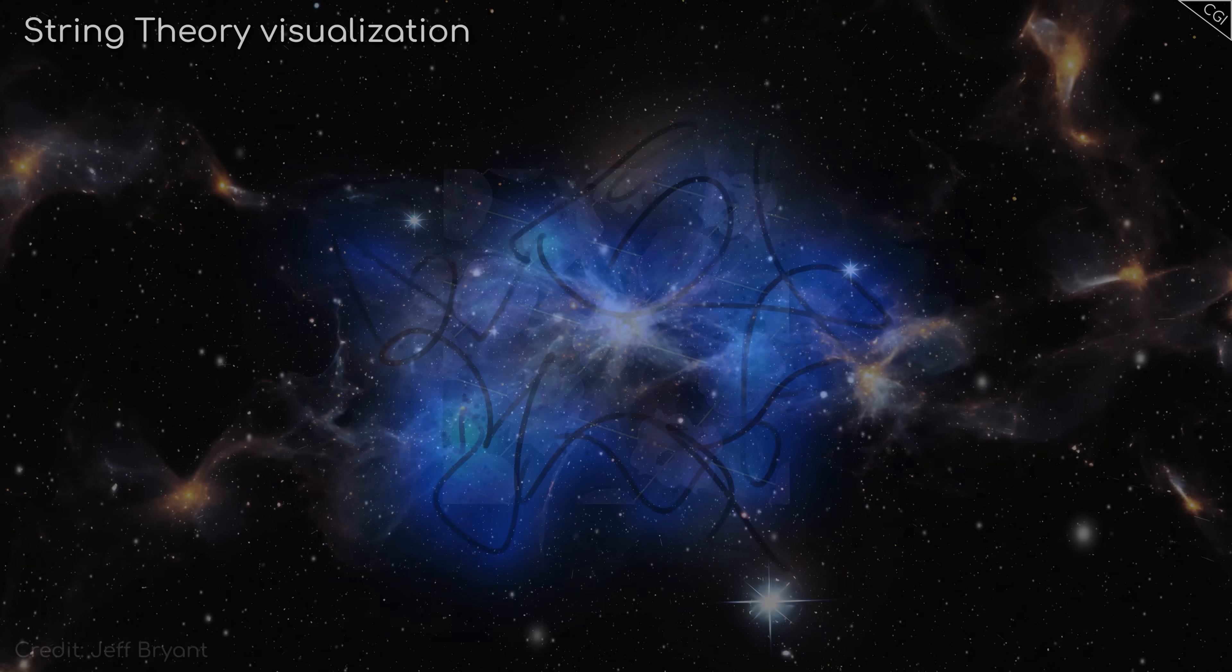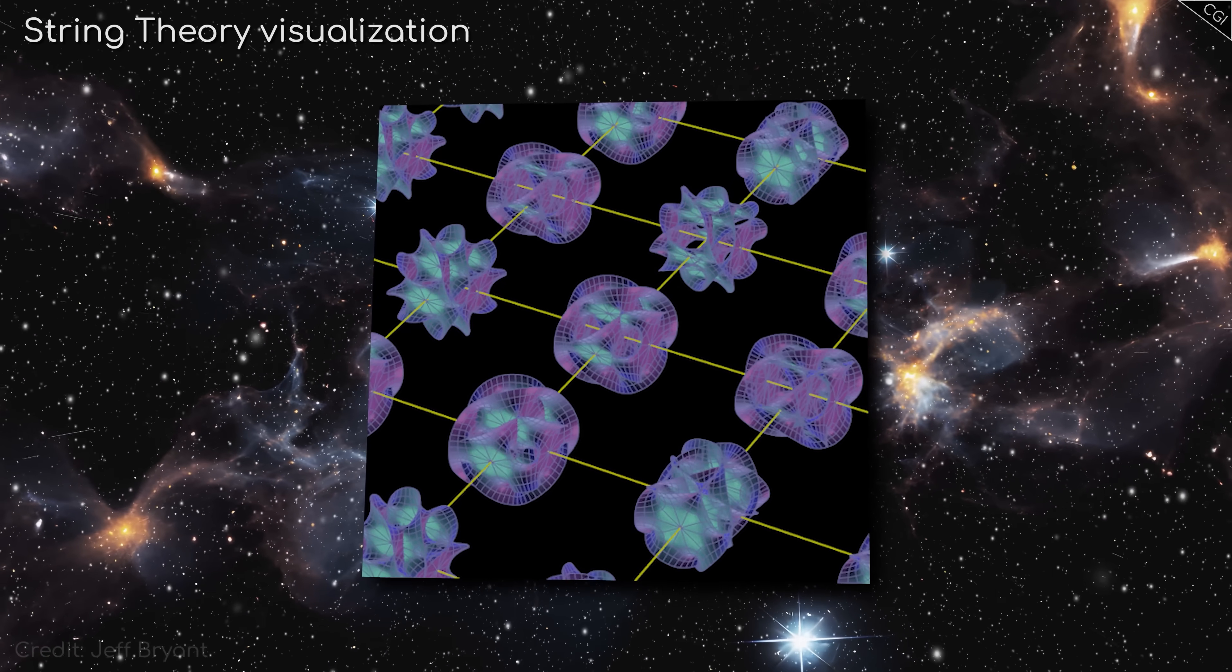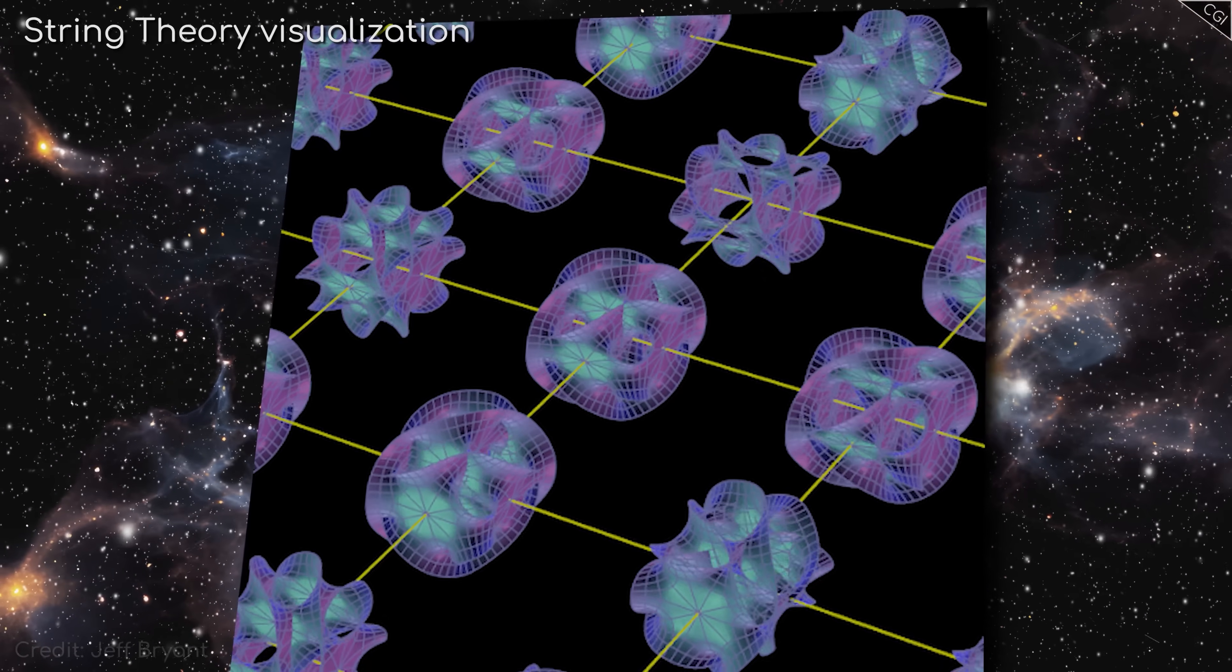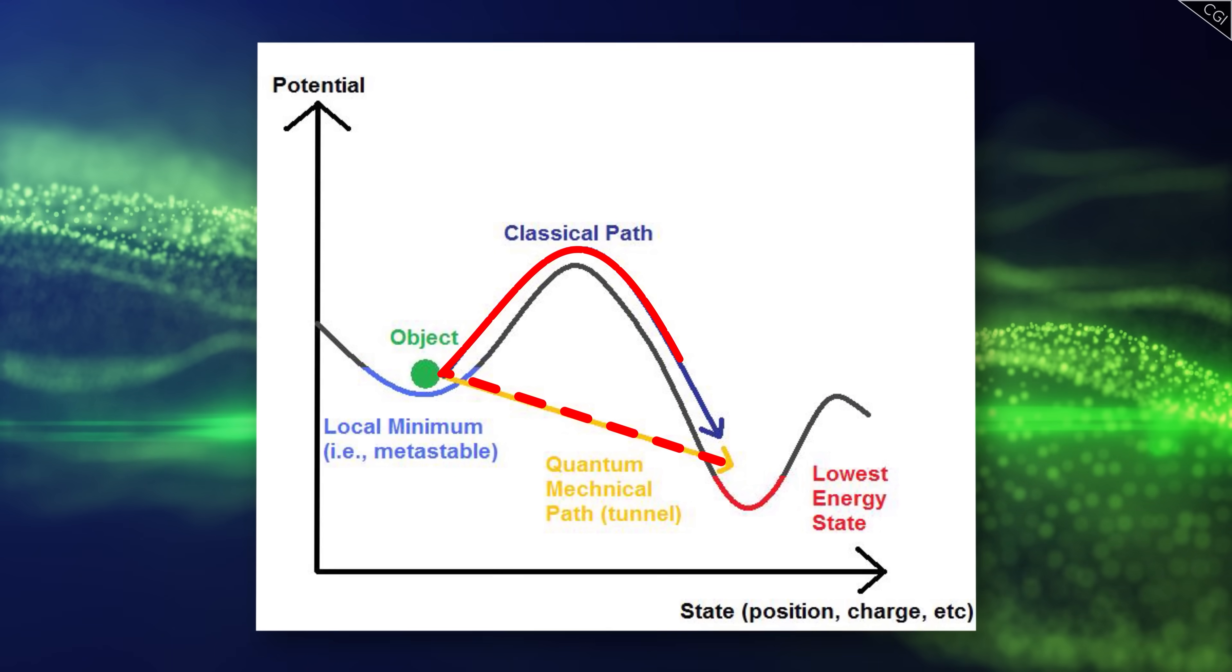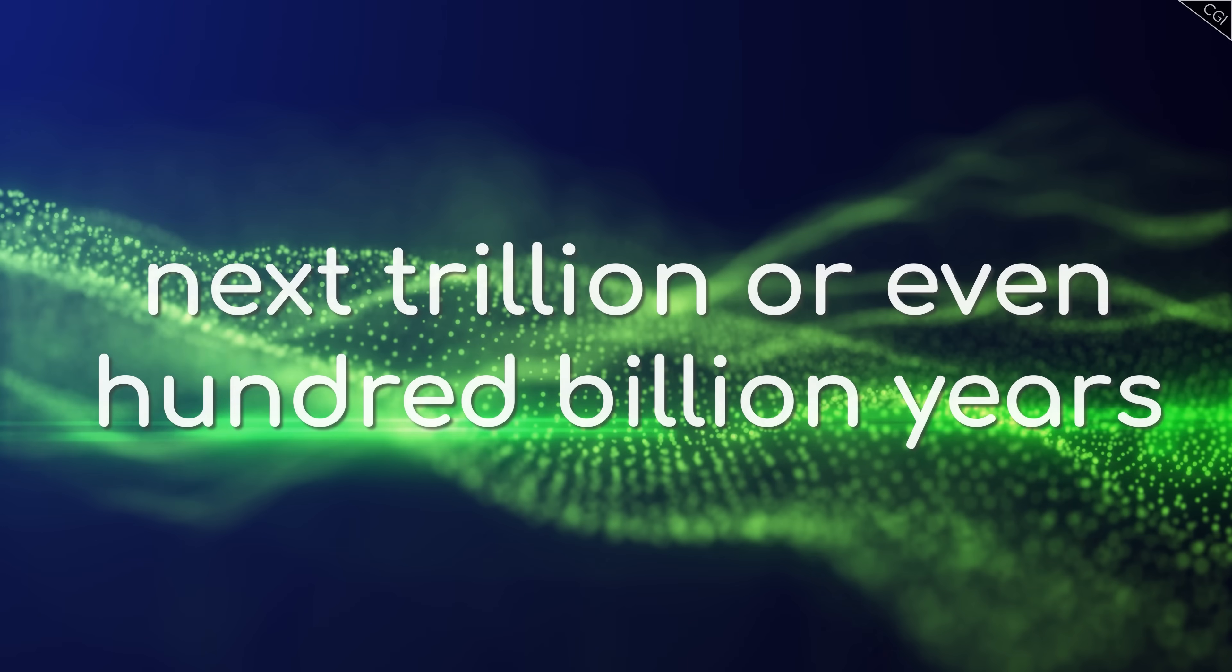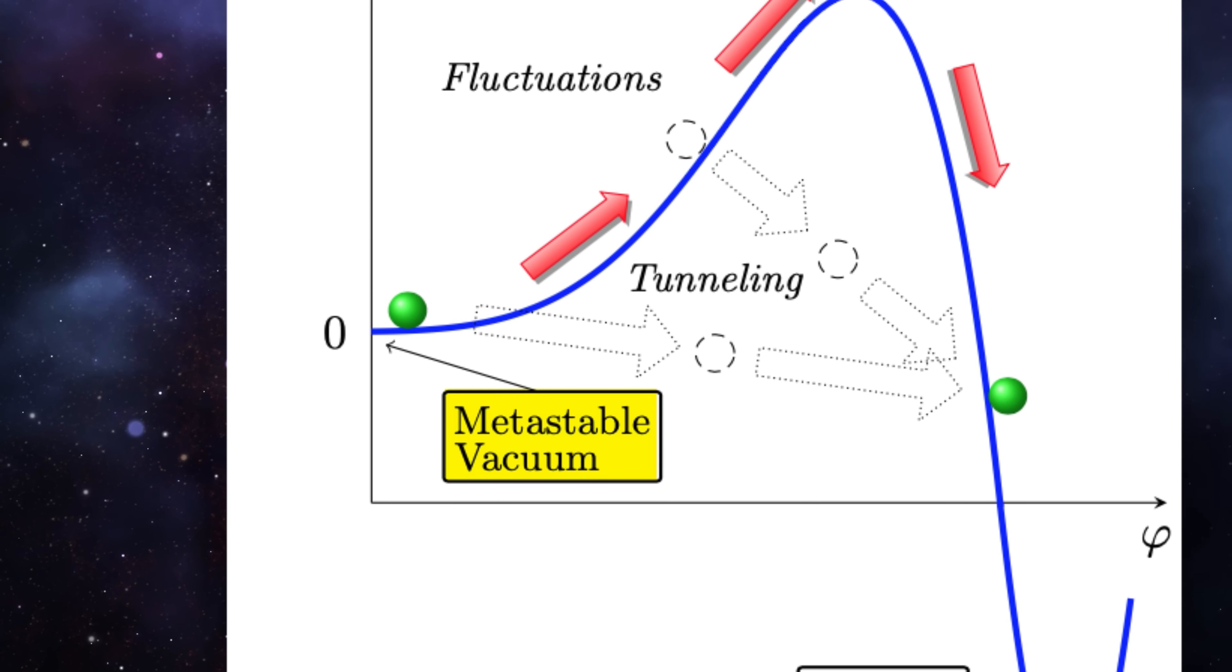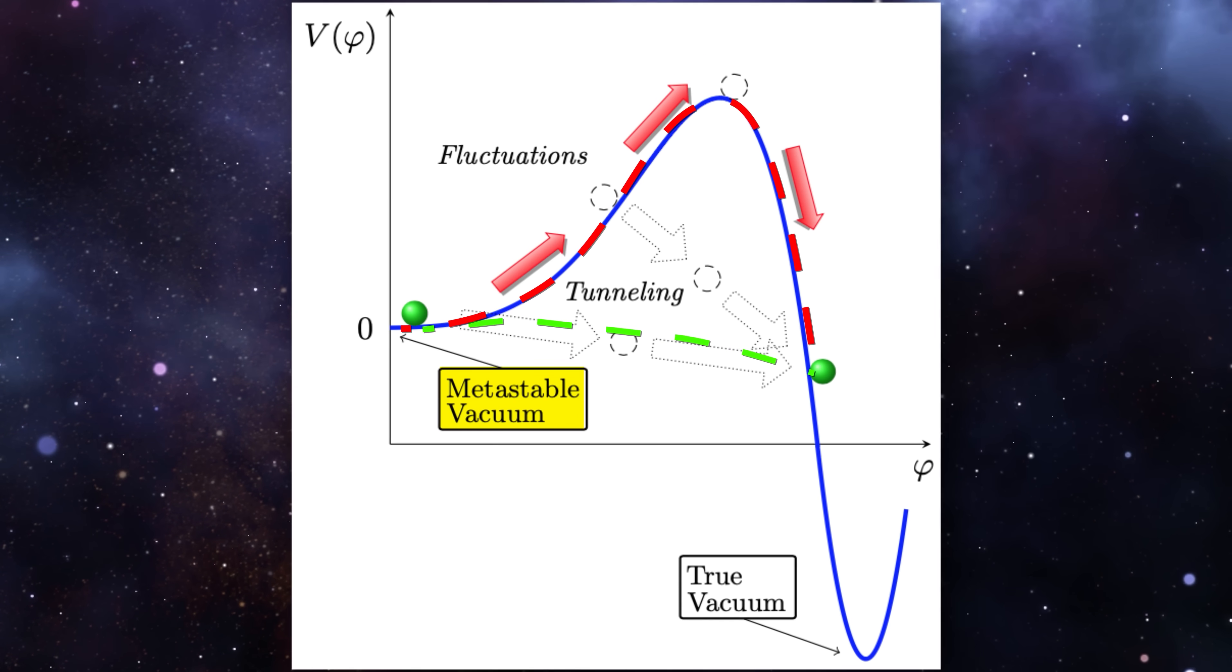A second reason to doubt the stability of the vacuum actually comes from string theory. While string theory hasn't made any quantitative predictions, it's given us some pretty strong hints that stable vacuum states with positive energies are really hard to come by. String theory also predicts the existence of new fields that could conceivably tunnel to different vacuum states much faster than the Higgs, say within the next trillion or even hundred billion years. Here comes the bad news though.